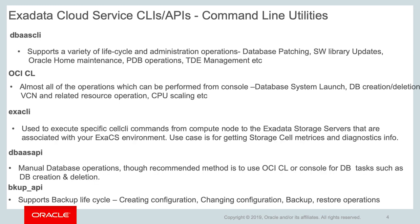Let's see what Exadata Cloud Service provides in terms of command line options. There are primarily five APIs and CLIs. Starting with Deba CLI, which supports a variety of lifecycle and administration operations such as database patching, software library updates, Oracle home maintenance, PDB operations, and also dealing with TDE management which is part of the advanced security option. The other command line tool is OCI CLI, and almost all of the operations which can be performed from console — such as database system launch, DB creations, deletions, or any operations with VCN-related resources such as creating a VCN or creating a user, or dealing with operations like CPU scaling — can all be performed by OCI command line.